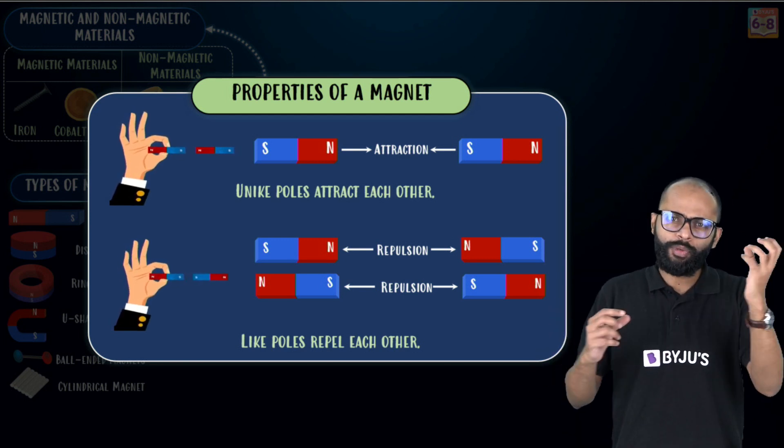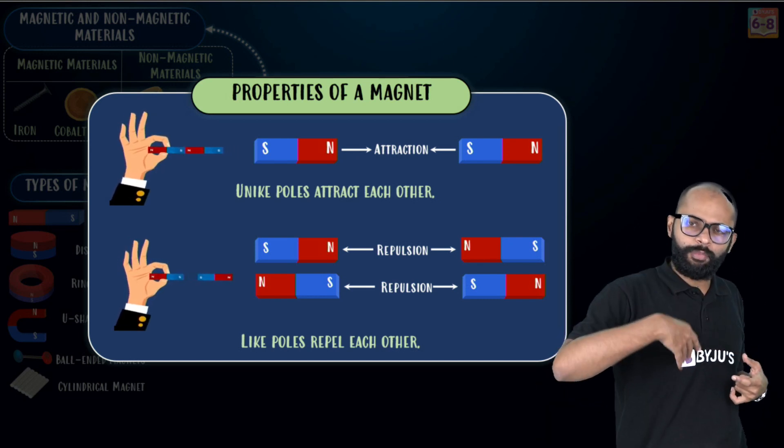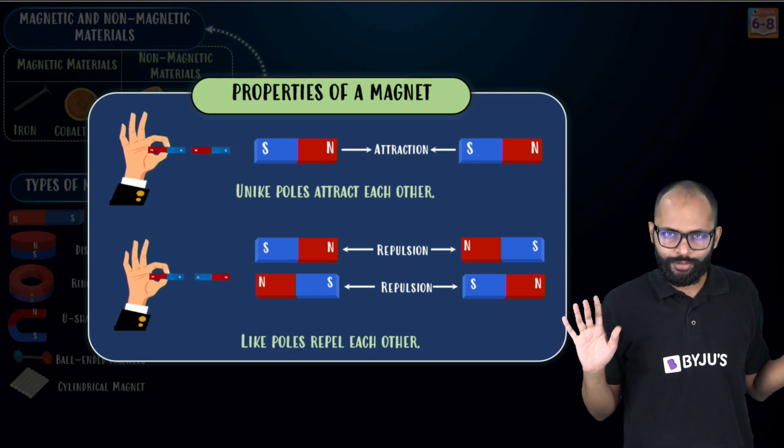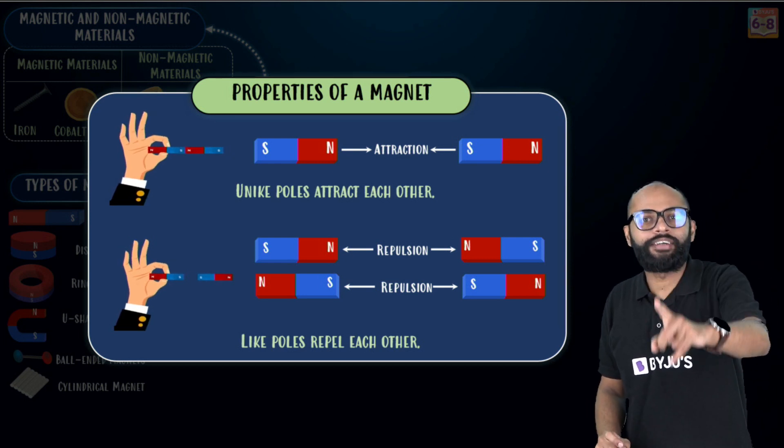What about unlike poles? If you bring north-south or south-north, they will attract, right? Unlike poles, they will be like, my brother, come here, come here, sit with me. I'm just joking so that you remember this. They don't shout like this, fine.